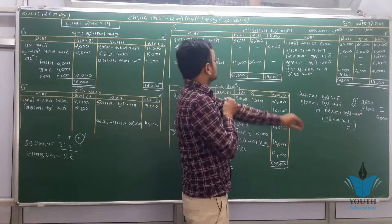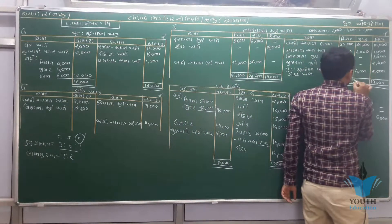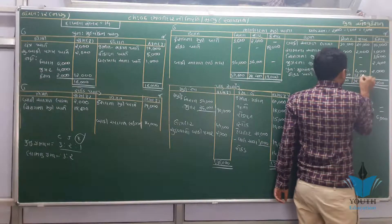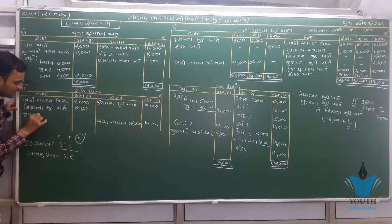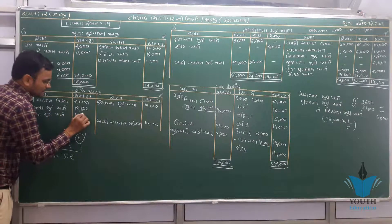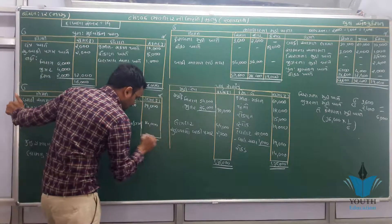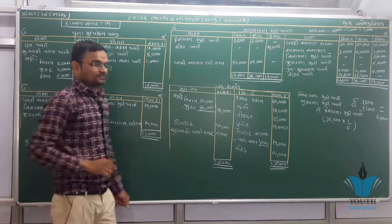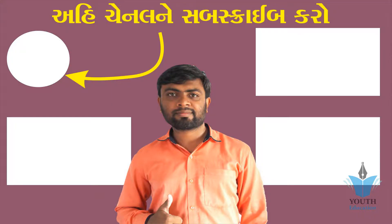જીગરના ઉધાર બાજુ સરવૈયો 83,400 - 20,000 = 12,400. ભાગીદારના મૂડી ખાતાની જમાં, રોકડ ખાતાની ઉધાર. જીગર મૂડી ખાતે 12,400. છેલ્લું ખાતું: રોકડ ખાતું બંધ. રોકડ ખાતાનો સરવૈયો 33,000 અને જમાં બાજુ.